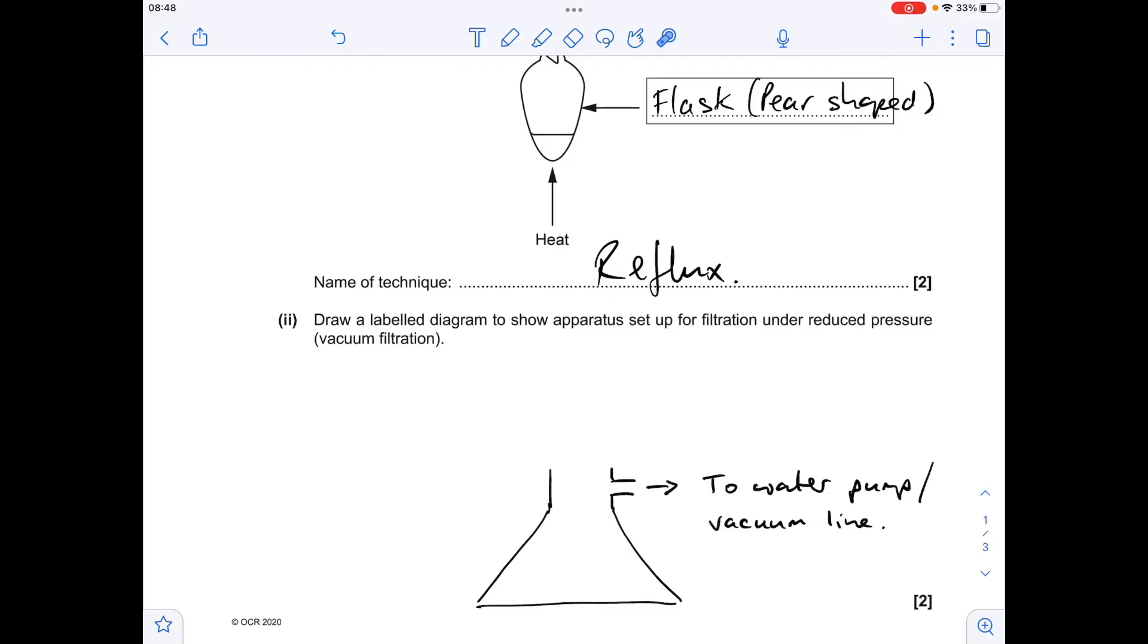First draw a Buchner flask - it looks like a conical flask but has this side arm that goes to a water pump or, if you're very lucky in your school or college, to a vacuum line. Then draw the Buchner funnel and make sure the top of your Buchner flask is completely sealed, so this needs to be airtight here.